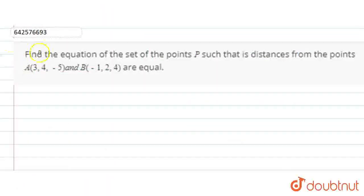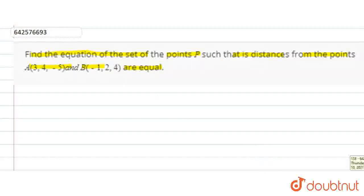Hello everyone, today our question is: find the equation of the set of points P such that its distances from the points A and B are equal. We need to find the path of the point P — or the locus of the point P — such that the distances from A and B to point P are equal. So we are given that PA equals PB.